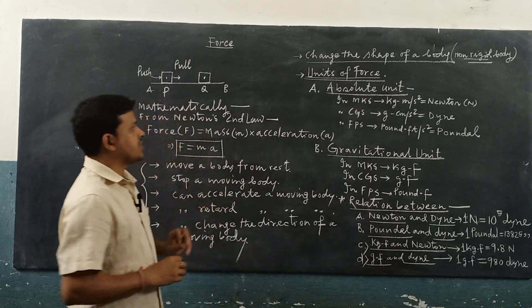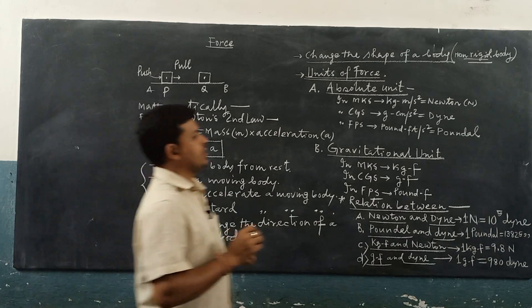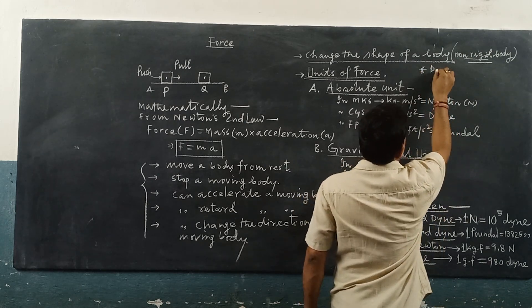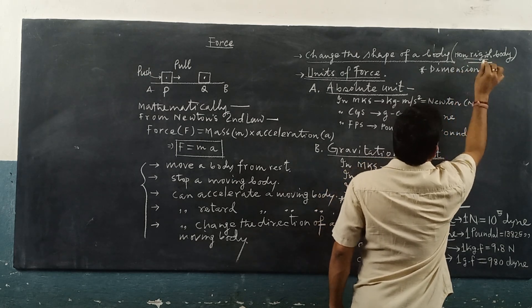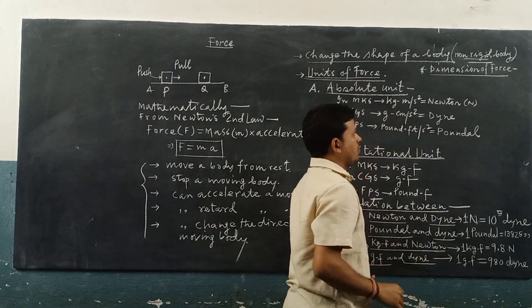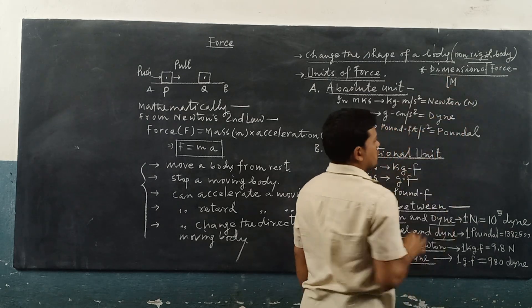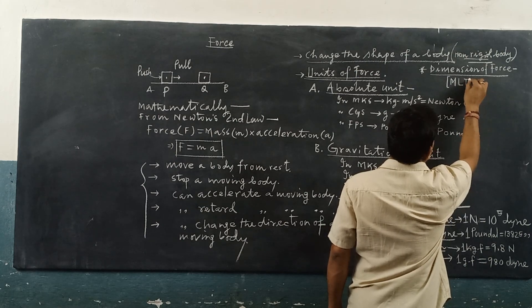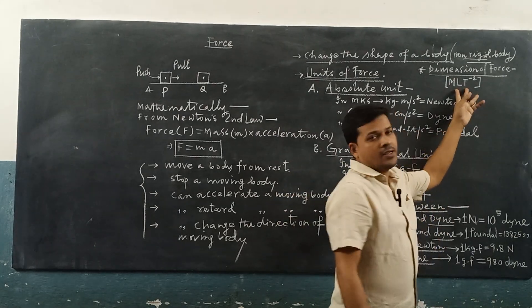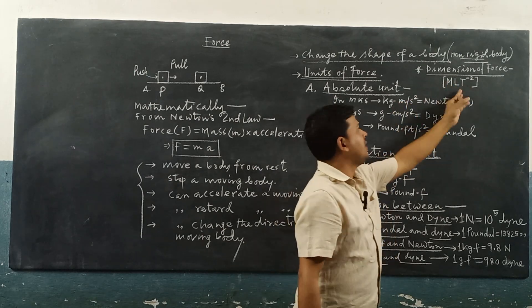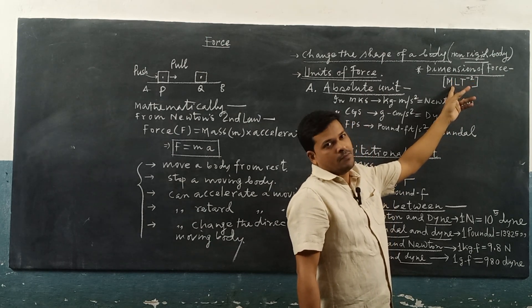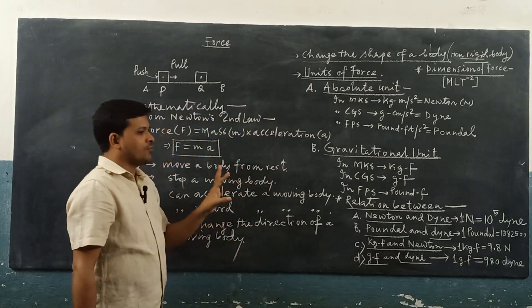As force is a physical quantity, we can also write its dimension. The dimension of force is the dimension of mass (M) multiplied by dimension of acceleration (LT⁻²), giving M L T to the power minus 2. So MLT⁻² is the dimension of force, where LT⁻² stands for acceleration and M for mass.